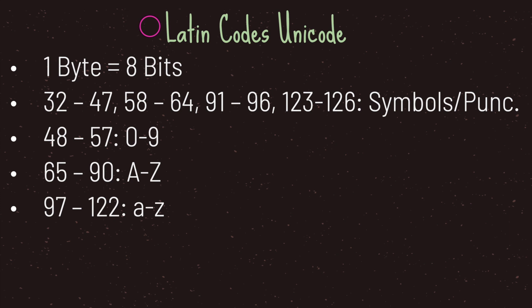The second category is Latin script codes, which are readable and separated into four subcategories. The first is symbols and punctuations — things like exclamation marks, pound signs, dollar symbols, percentage symbols, and all the symbols on your English keyboard, including punctuations like commas and periods. Symbols and punctuations are spread across decimal values thirty-two through forty-seven, fifty-eight through sixty-four, ninety-one through ninety-six, and one hundred twenty-three through one hundred twenty-six. The second subcategory is numbers zero through nine, assigned to decimal values forty-eight through fifty-seven.